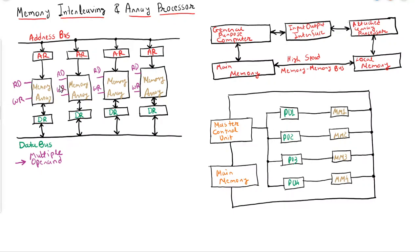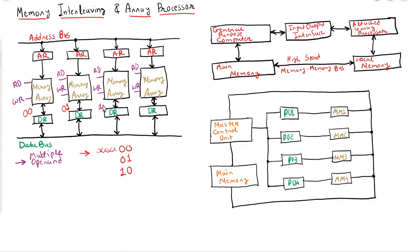Now let us see how this memory interleaving technique works. Let's say memory is divided into four parts. Content of memory will be stored according to the address. If the last two bits are 00 then it will be stored into the first module, if 01 then the second module, if 10 then the third module, and if 11 then the fourth module.